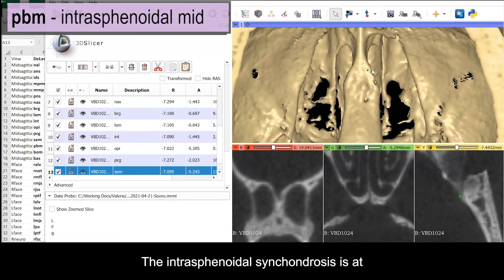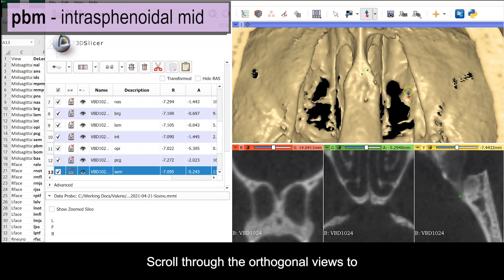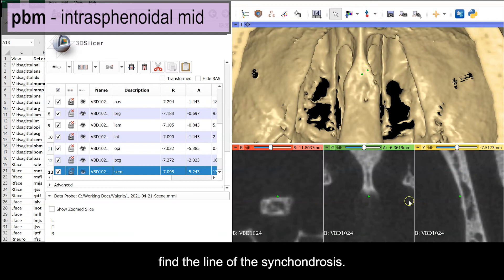The intrasphenoidal synchondrosis is at the junction of the presphenoid and the basysphenoid on the endocranial surface. Find the expanded area in the cranial base posterior to the optic canals. The synchondrosis is usually just rostral to them. Scroll through the orthogonal views to find the line of the synchondrosis. It's usually visible as a line of radiolucine or dark voxels.